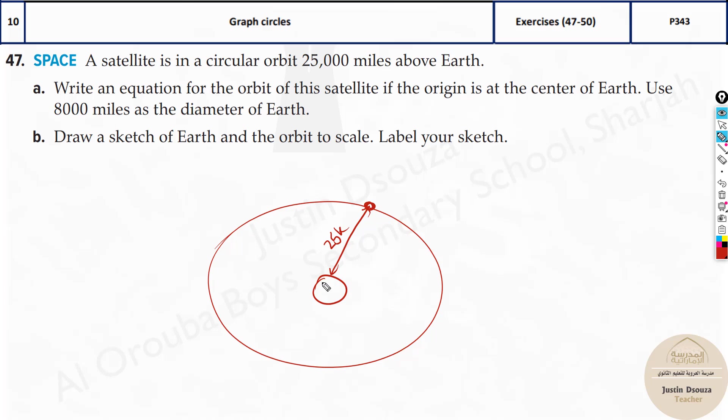But there is one more thing, the diameter of earth is given. See where the satellite is orbiting from the center of the earth, right? Now what is from here to here? That is 4,000, because the diameter is 8,000, so radius is 4k. And then 25k.